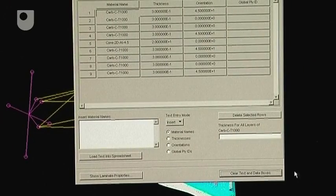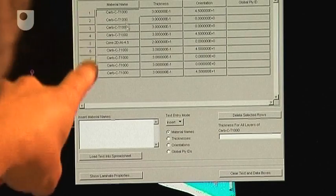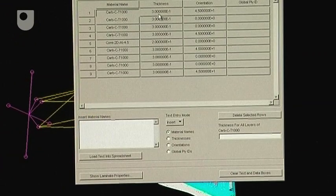This is the input method that we use in this software for actually representing the material stack with all the different plies. So if you see the spreadsheet here, there are, in this case, 9 different layers. Within that you specify the thickness of each one and the orientation of each one.